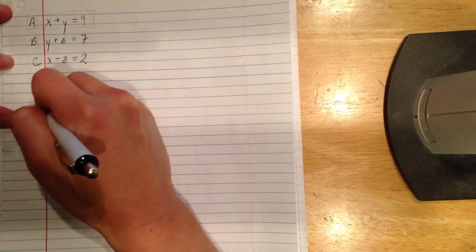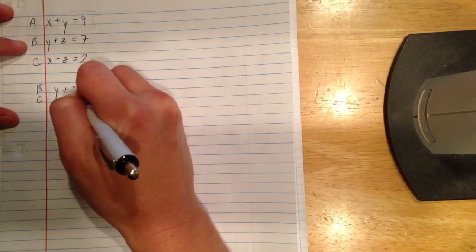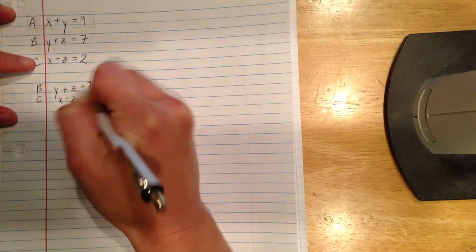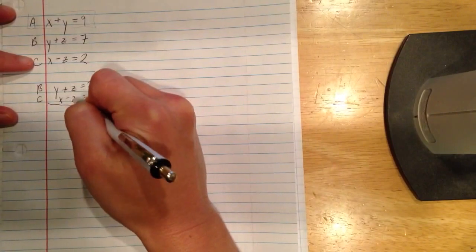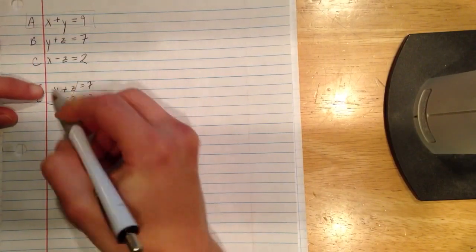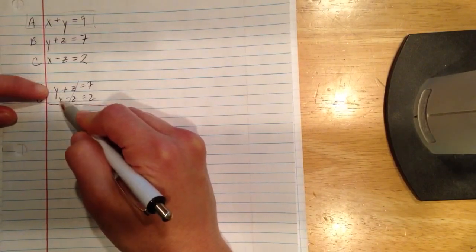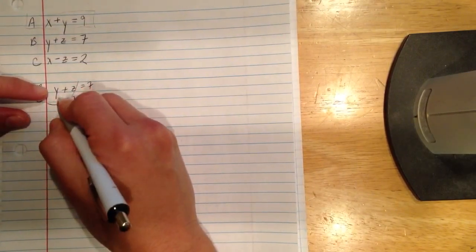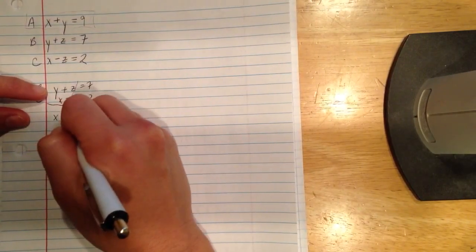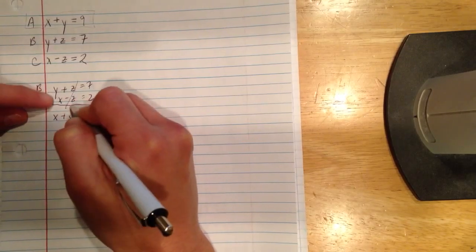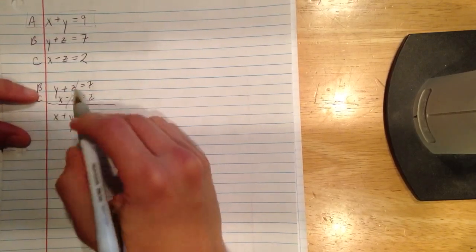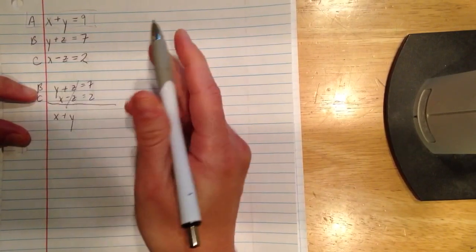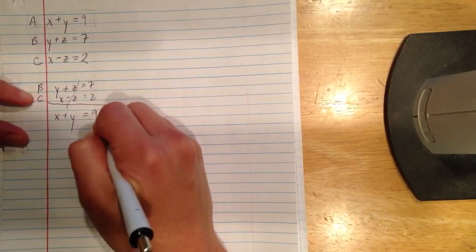So if I took my b and my c, and make sure I write them down carefully, y plus z is 7, and x minus z is 2, and I add these together, the z's will totally go away. Now here you've got to be careful. Those aren't like terms, so you can't really combine them, but when you're adding this side, you still just have y plus x. So I'm just going to write in the other order because it looks better as x plus y on this side. Adding up all the terms on this side, the z's would go away, and you just have x plus y on the sides of 9.